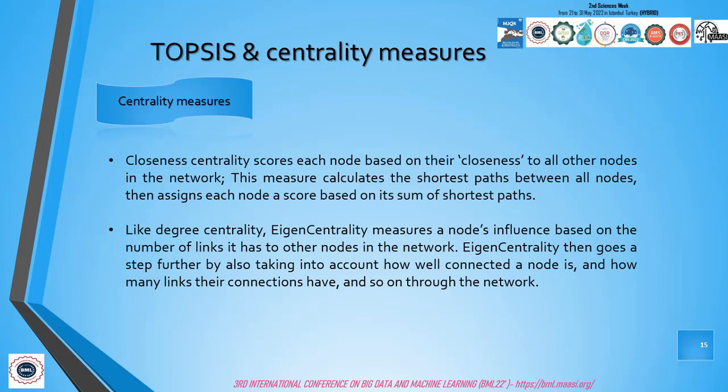Closeness centrality scores each node based on their closeness to all other nodes in the network. This measure calculates the shortest path between all nodes, then assigns each node a score based on its sum of shortest paths. For finding individuals who are best placed to influence the entire network most quickly, closeness centrality is the most reachable centrality in this context.